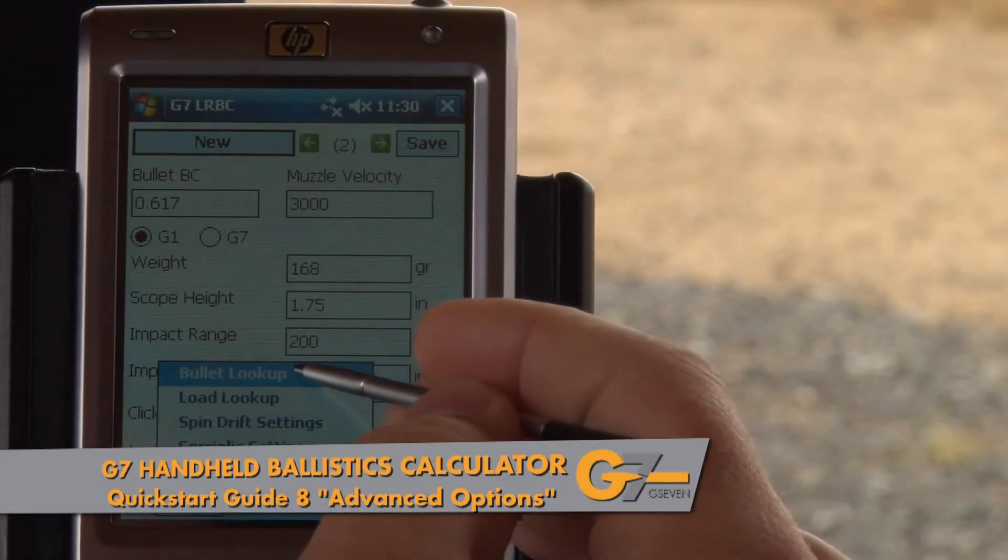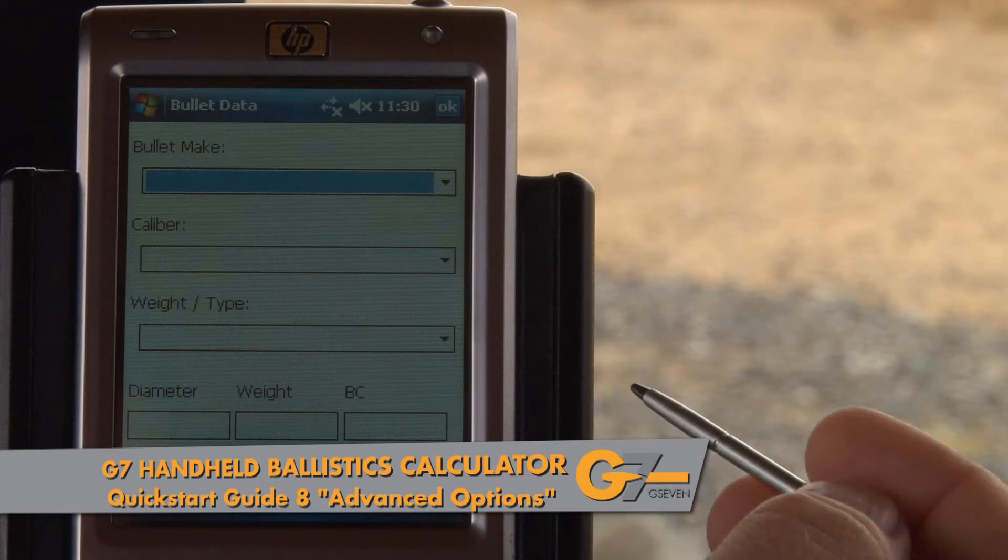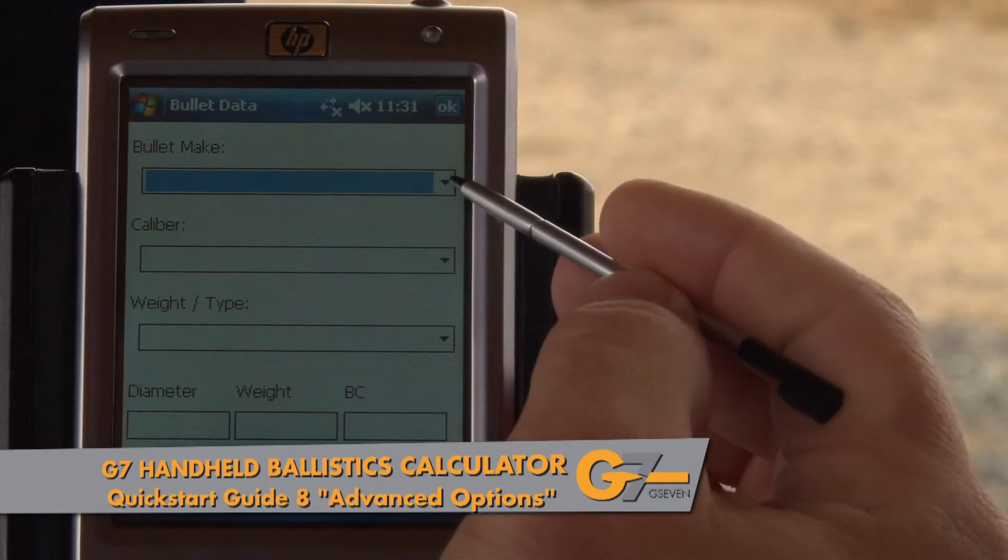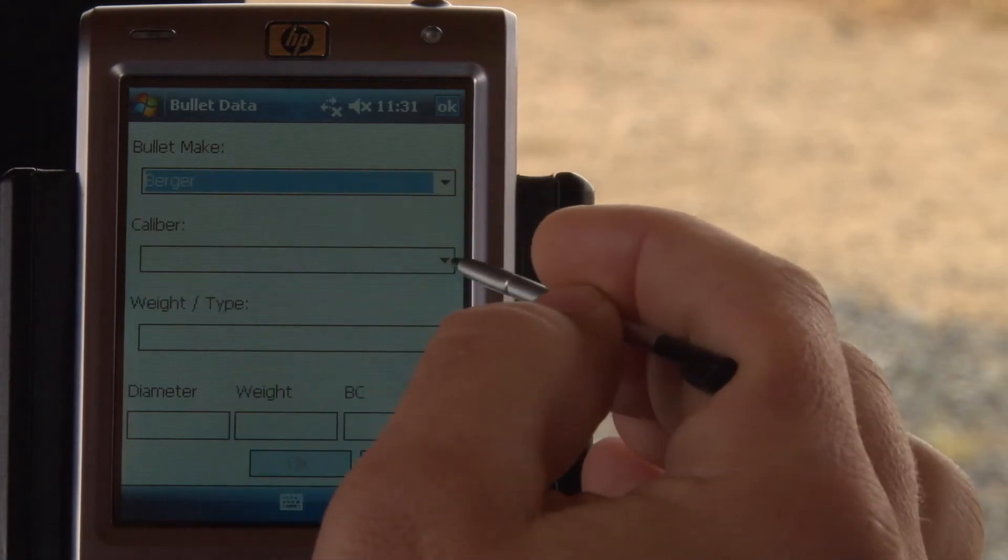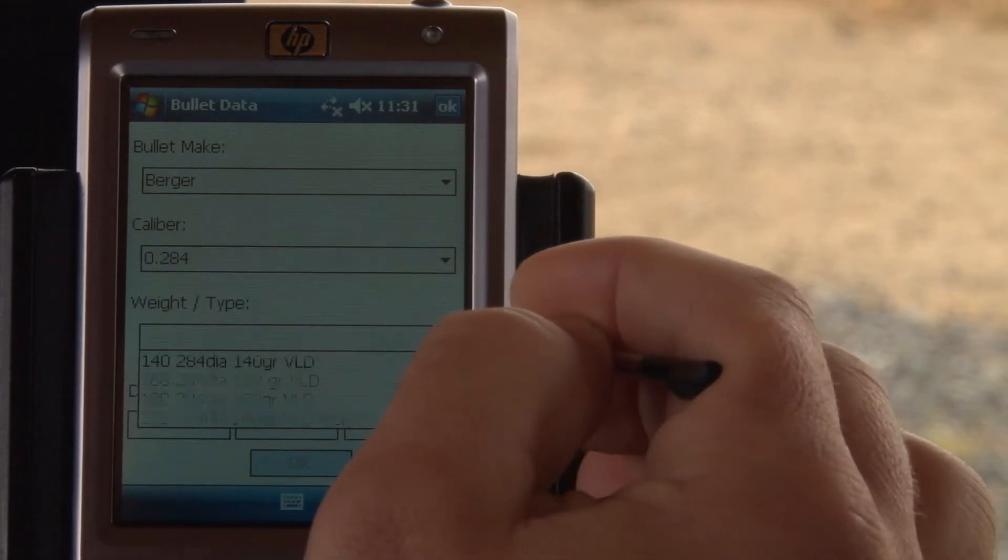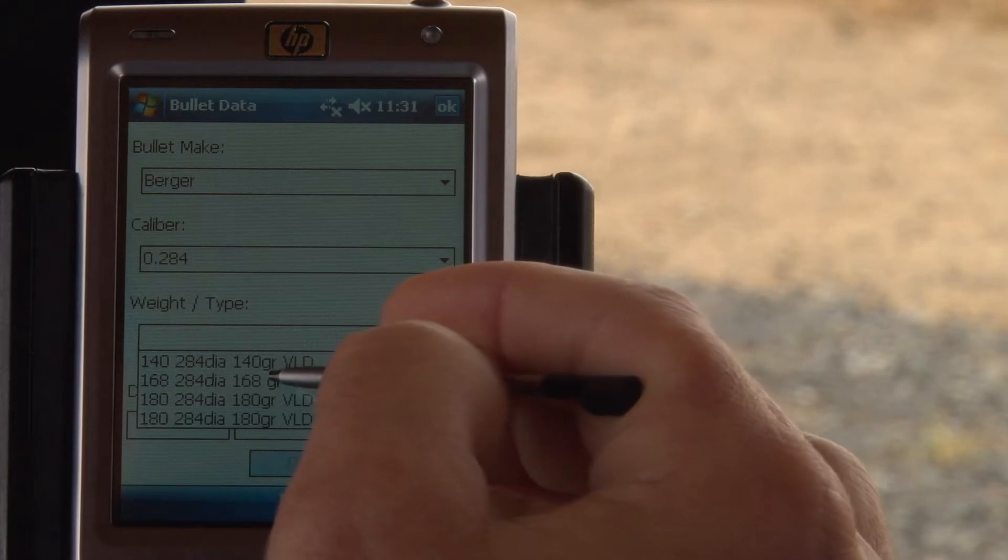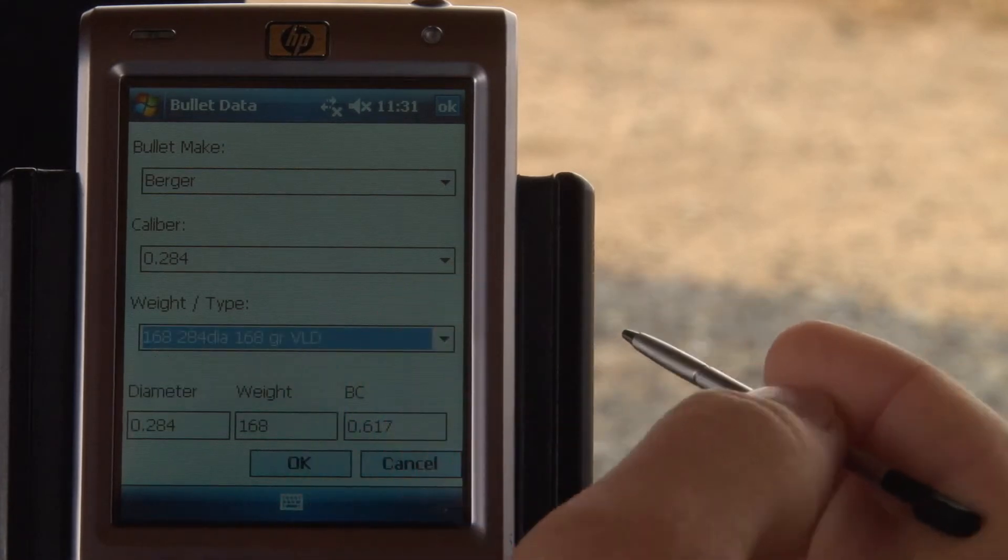So in our advanced options, we've got a bullet lookup that includes your bullet make and ballistic coefficient. Let's select Berger, do a 7mm, and we're going to do a 168 grain VLD.